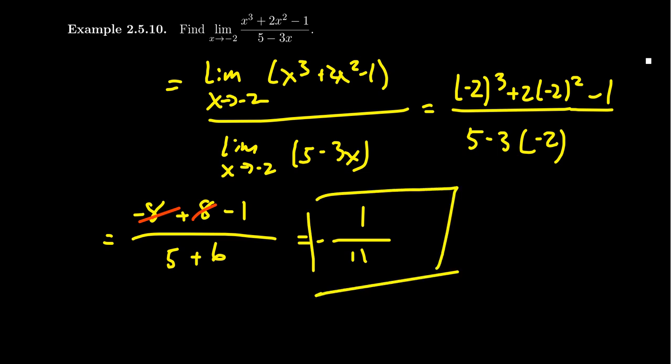Because the function was continuous, we were able to simply plug in the value negative 2 to compute the limit. This was guaranteed because combinations of addition, subtraction, multiplication, and division will preserve the continuity of these functions. A rational function is continuous on its domain because it's a quotient of polynomials, which are continuous on their domains.